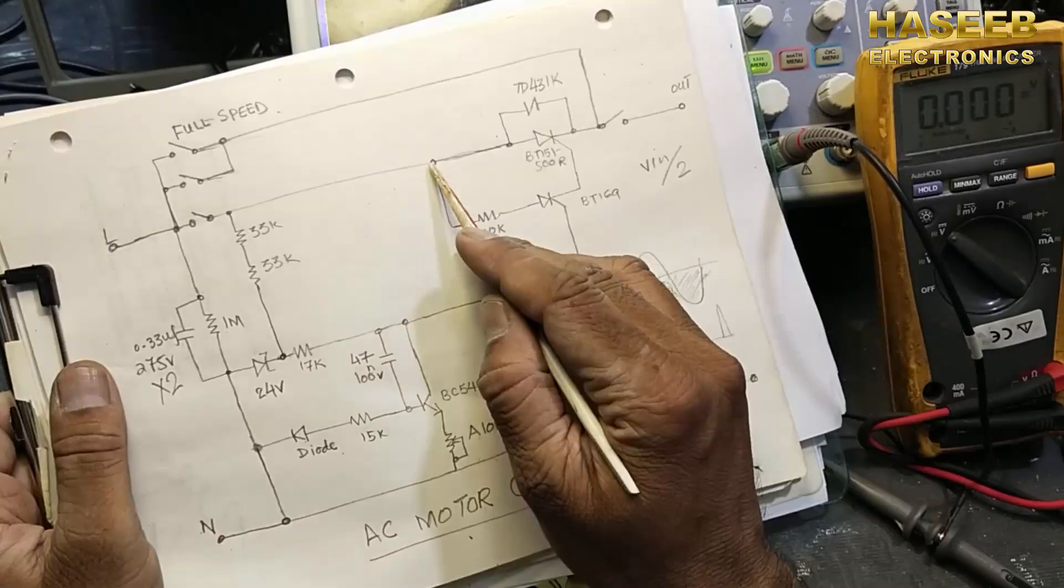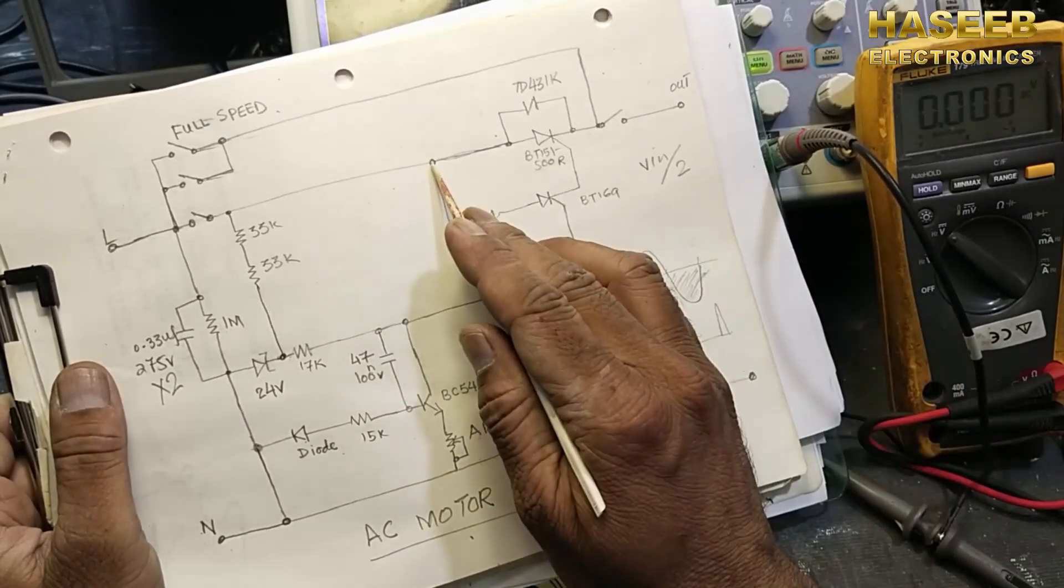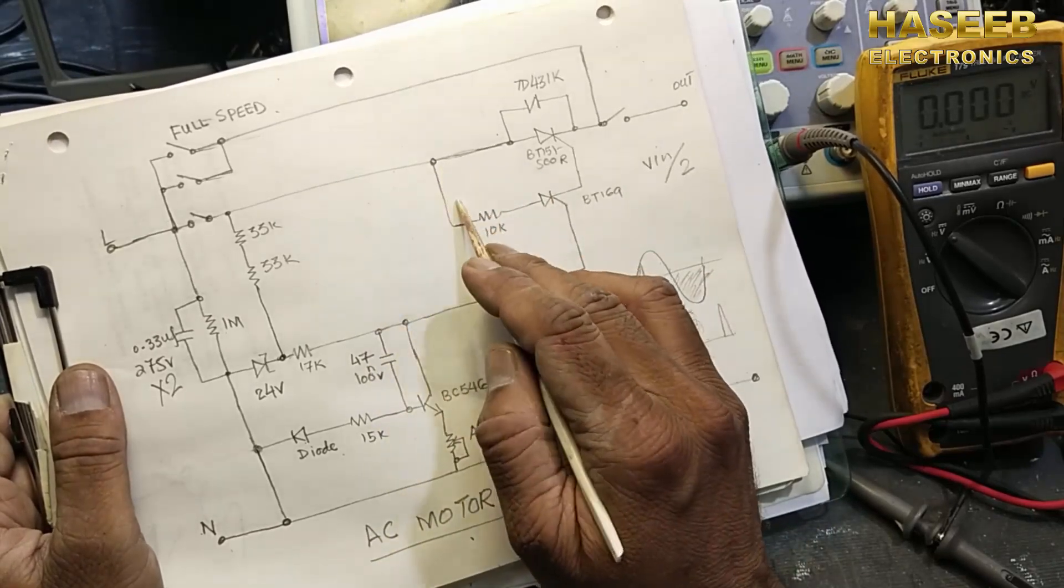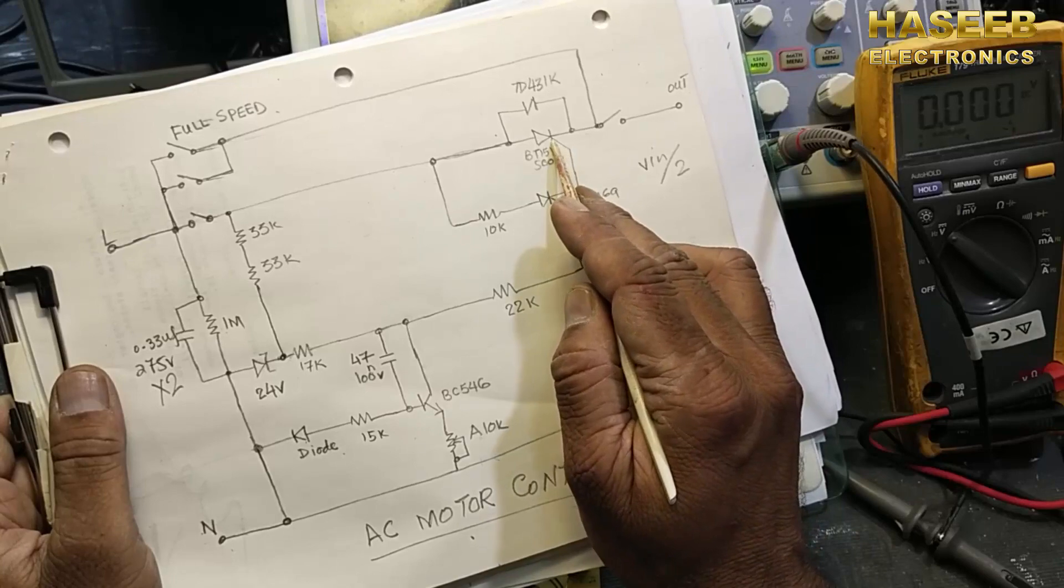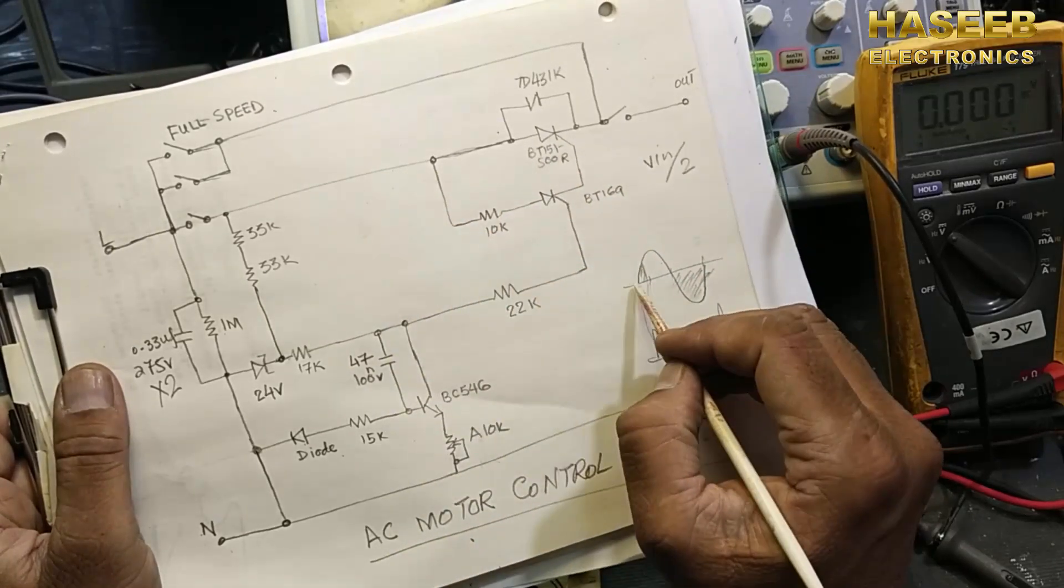So when it will trigger, it will sample. Because we are providing this time, it will sample these voltage, line voltage in positive from positive peak, and it will apply to the trigger this SCR when the peak is in positive side.